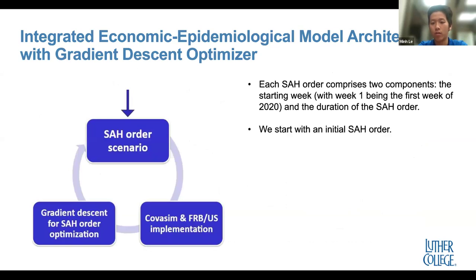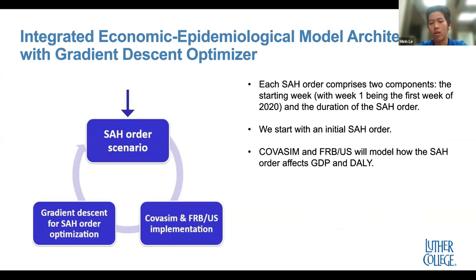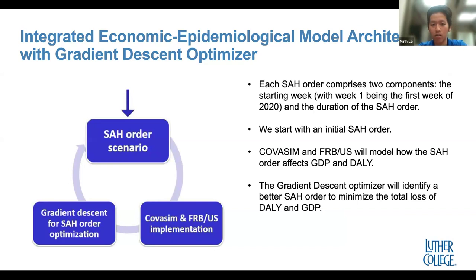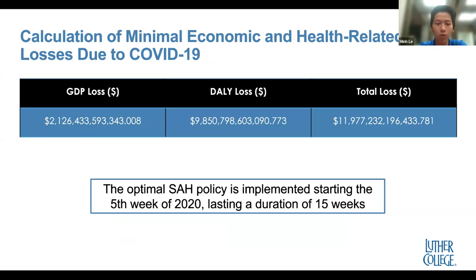For optimization, we start with an initial stay-at-home order. The CovaSim and FERBUS models simulate how stay-at-home orders affect GDP and DALY. A gradient descent optimizer then tries to identify a better order to minimize the total loss of DALY and GDP. When you minimize the DALY loss — the pandemic loss — you're essentially increasing the GDP loss, so we're finding the optimal balance between them. The optimizer runs for a number of epochs until no better stay-at-home order can be found. Our results arrived at approximately $2 trillion in GDP loss and around $9.8 trillion in DALY loss.